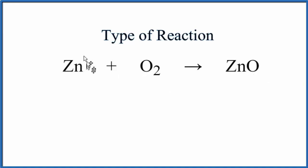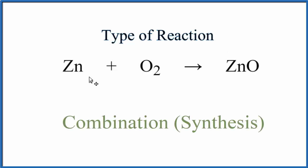When I look at the equation here, I have one substance, two substances here. So these two substances, they combine to form one new substance. Because they're combining, we call this a combination reaction.